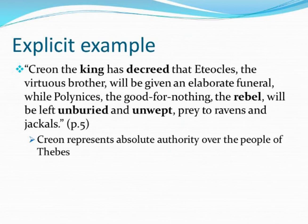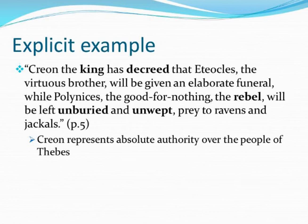We will first begin with an example showing explicit authority. Creon, the king, has decreed that Eteocles, the virtuous brother, will be given an elaborate funeral, while Polynices, the good-for-nothing rebel, will be left unburied and unwept, prey to ravens and jackals. This passage shows Creon asserting his power as king. He lowers Polynices' status to a good-for-nothing rebel and alters reality by feeding the public false descriptions of the two brothers. All citizens must follow the laws he makes.